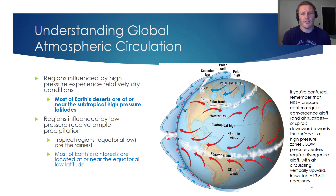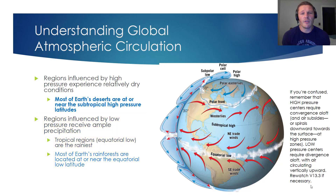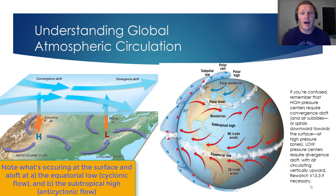To summarize: regions influenced by high pressure will experience relatively dry conditions, and most of Earth's deserts are at or near the subtropical high-pressure latitudes of 30 degrees. But regions influenced by low pressure will receive ample precipitation — your tropical regions at or near the equatorial low are the rainiest regions on Earth. This image also reinforces the relationship between what happens near the surface and what's happening aloft.